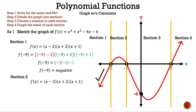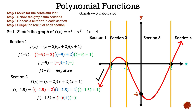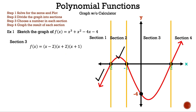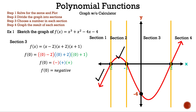For section 2, we chose -1.5: (-1.5 - 2) is negative, (-1.5 + 2) is positive, (-1.5 + 1) is negative. Negative times positive times negative gives a positive result — section 2 is above the x-axis. For section 3, we pick 0: (0 - 2) is negative, (0 + 2) is positive, (0 + 1) is positive. Negative times positive times positive gives a negative — section 3 is below the x-axis.